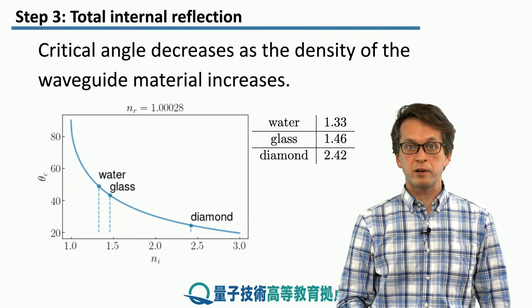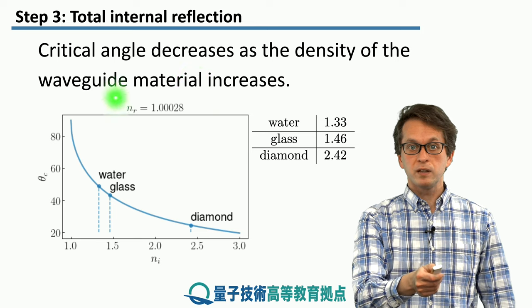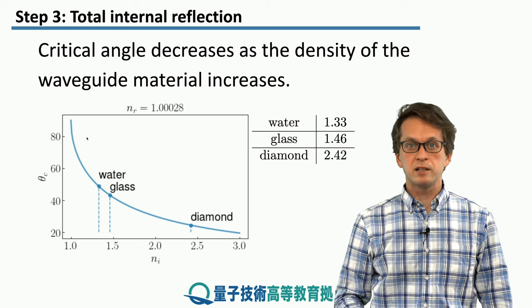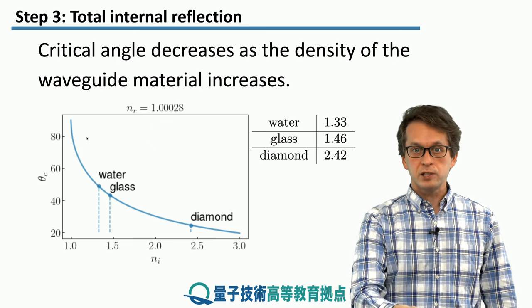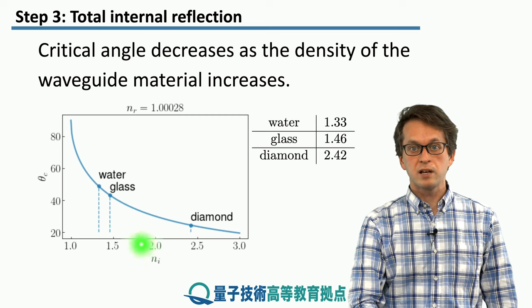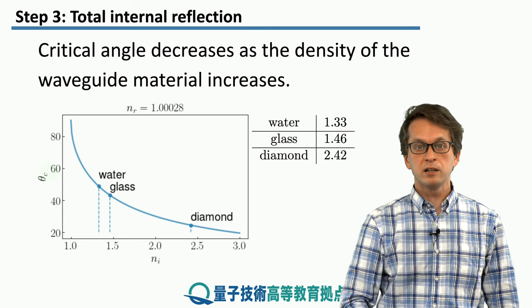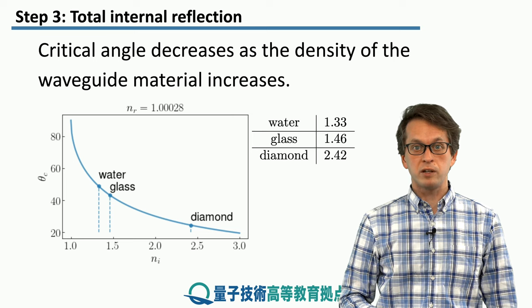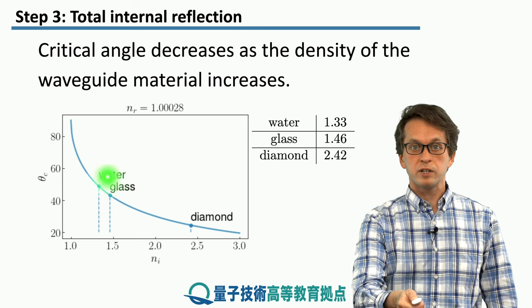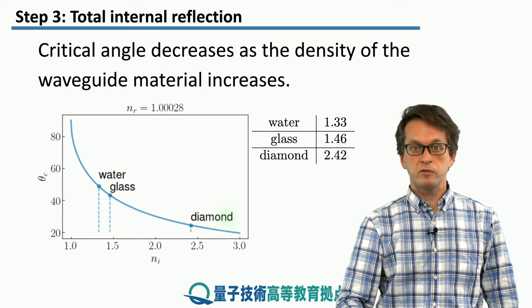So let's consider some numerical examples. Here, we are keeping the refractive index of the outside medium, which for us is air, fixed. So it's just 1.00028, basically the same as 1. And what we are changing is the material of the fiber. So we are changing the refractive index ni. And we are looking at the value of the critical angle beyond which total internal reflection can occur. So if we are plotting the arc sine of the previous expression for theta c, then we get the following curve.